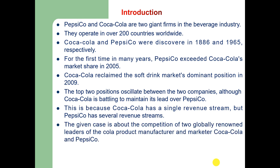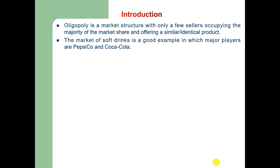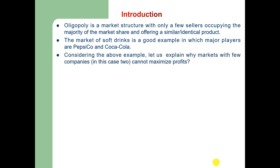The given case is about the competition of the two globally renowned leaders of cola product manufacturers and marketers, that is Coca-Cola and PepsiCo. We analyze this case assuming an oligopolistic market structure in which there are only two firms, so we may think of a duopoly situation. Oligopoly is a market structure with only a few sellers occupying the majority of the market share and offering a similar, identical, or differentiated product. The soft drink market is a good example, in which the major players are PepsiCo and Coca-Cola. Let us explain why markets with few companies cannot maximize profits.